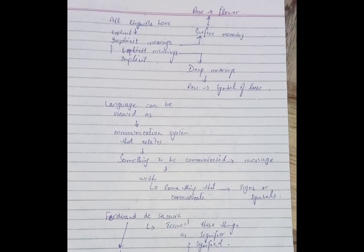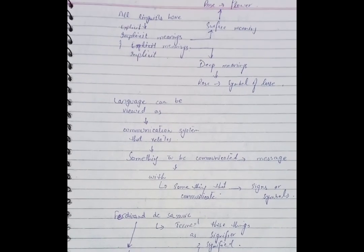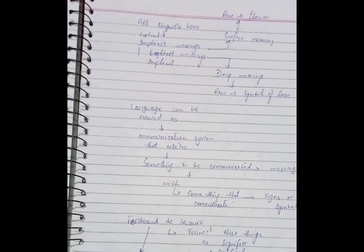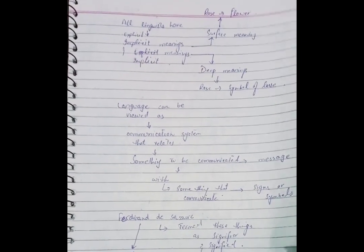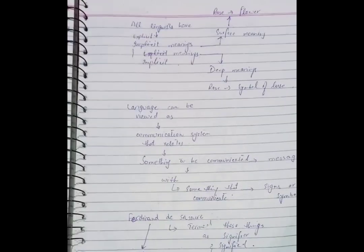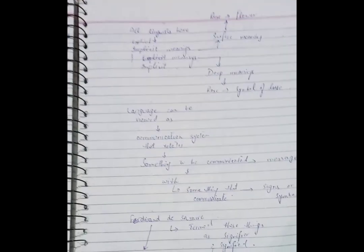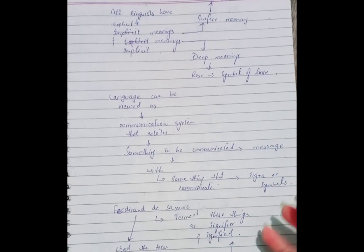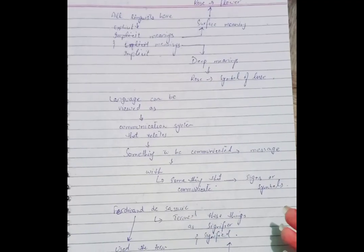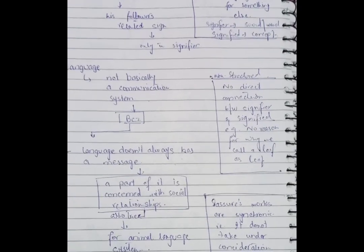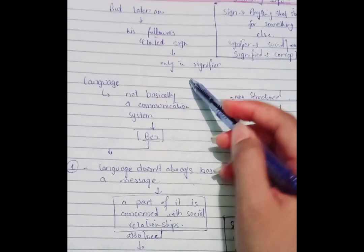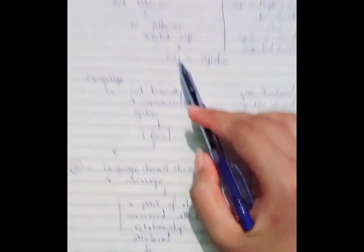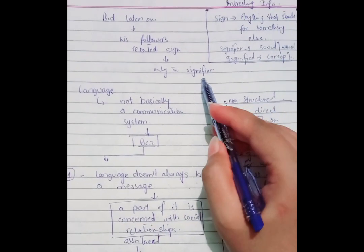We do not have any specific reason why we call the red-colored flower a rose, or why we call a tree a tree. That is why they reject that a sign always creates a relationship with the signified. The followers discussed that signs only relate to the signifier; they cannot be related to the signified.